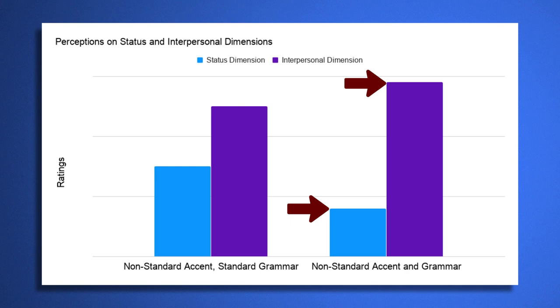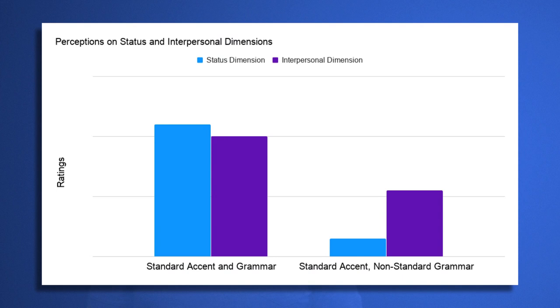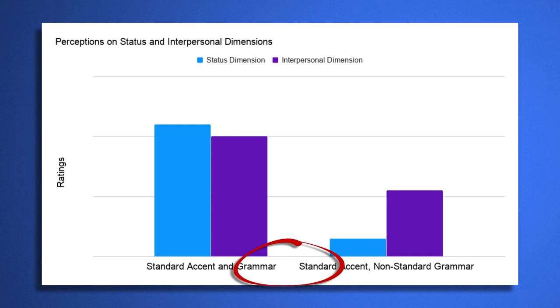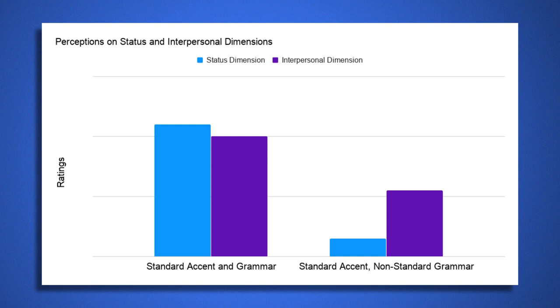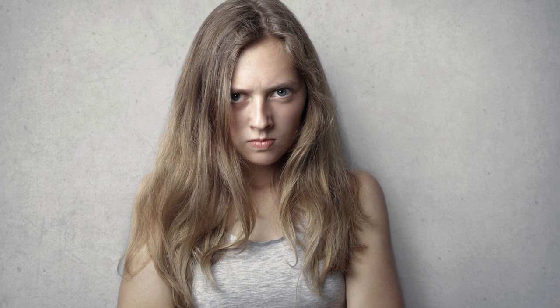Now imagine a situation where a speaker has changed his or her speech to conform to the standard accent, but still uses non-standard grammar or regional vocabulary. Will using the standard accent perhaps make up for the effect of the non-standard syntactical cues? Surprisingly, if you have a standard accent — that so-called neutral accent — but you use non-standard grammar, you're actually worse off. These cues seem to be in conflict: you sound like a standard speaker, but you use non-standard grammar. Listeners perceive you low on status and on interpersonal attributes. To put it bluntly, you sound educated, so you have no excuse to use that kind of grammar.